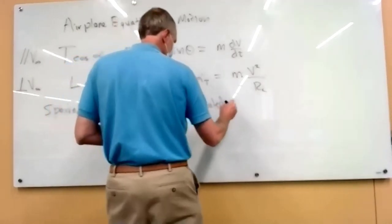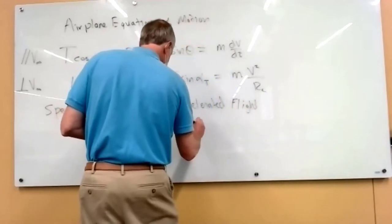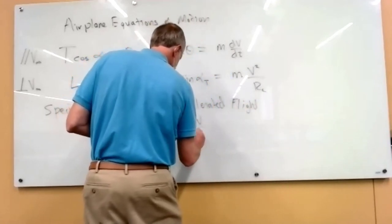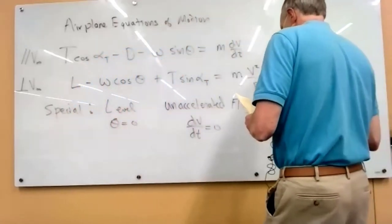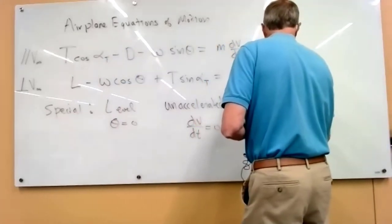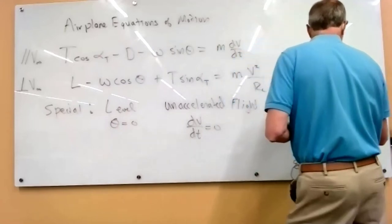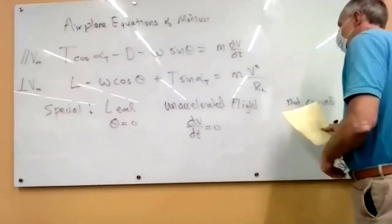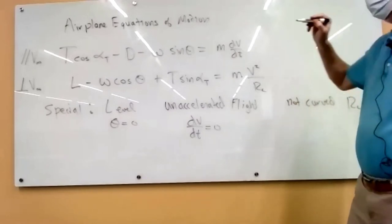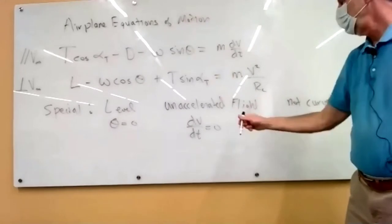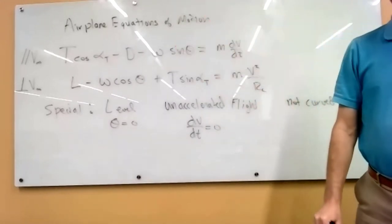Unaccelerated flight, which means the velocity does not change. Unaccelerated flight, which means the flight path is not curved, the radius of curvature is infinity. So it means flying level across the horizon, not speeding up, and not turning in any way.